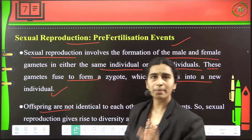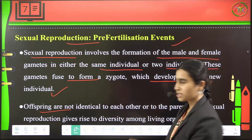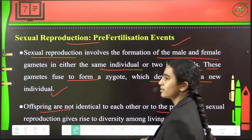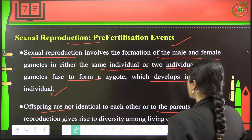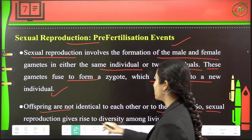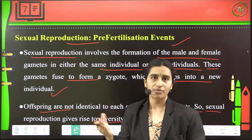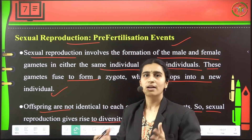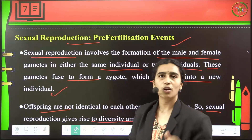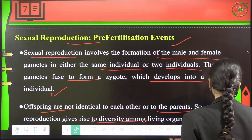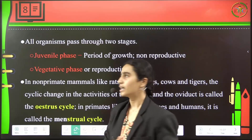Offspring will not be identical — they will not be Xerox copies of each other. They may resemble their parents but not completely. Sexual reproduction will give rise to diversity among living organisms. We can see newer and diverse forms when sexual reproduction is undergone, because offspring will not be exactly similar to their parents.